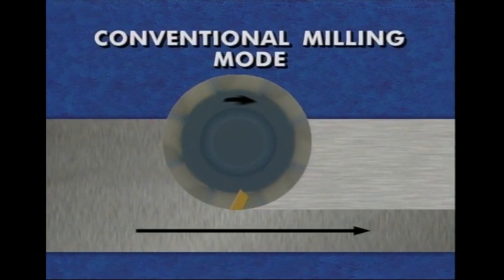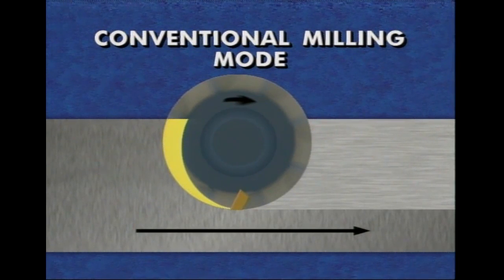This is the reverse of the conventional milling mode, in which the milling cutter bites into the minimum chip thickness at the start of the cut and exits at the maximum chip thickness.